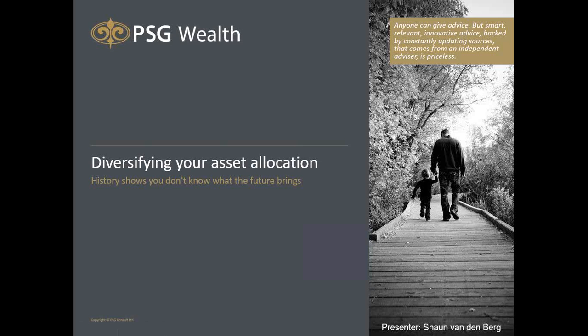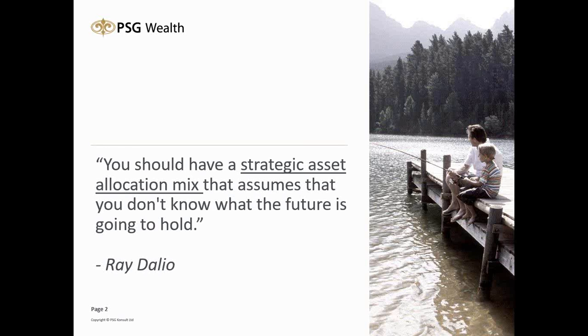By the subtitle, it says history shows that you don't know what the future brings — a quote from G. Richard Wagner Jr. What we're talking about today is that asset allocation is a form of diversification as risk management. Building on that, Ray Dalio says you should have a strategic asset allocation mix that assumes you don't know what the future is going to hold.